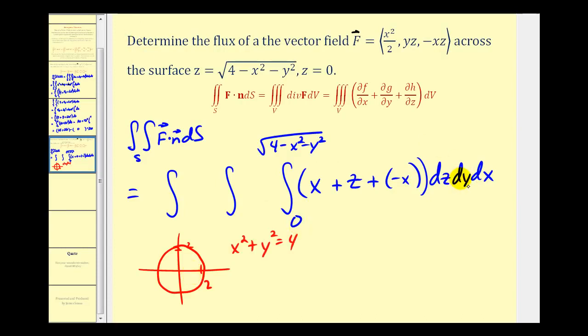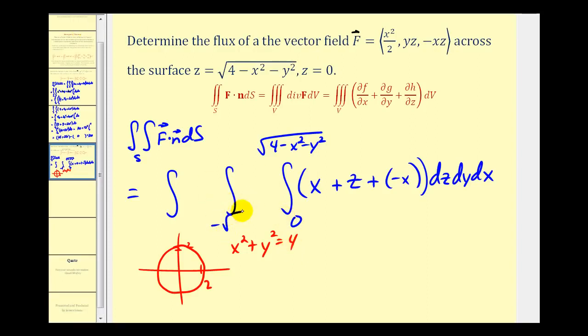For limits of integration for Y, they must be expressed as a function of X. Solving this for Y gives us plus or minus the square root of four minus X squared. So the lower limit would be negative square root of four minus X squared to positive square root of four minus X squared. X would be from negative two to positive two.